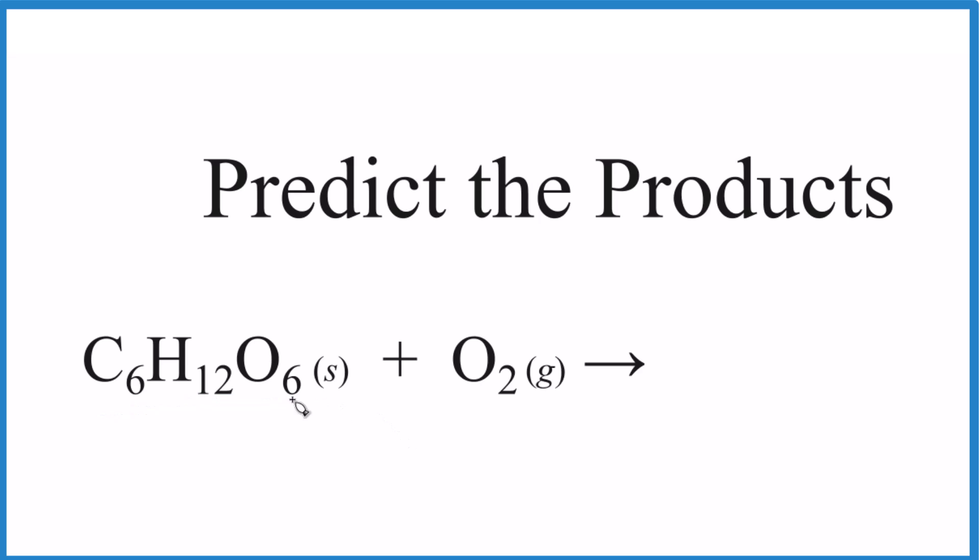So when you try to predict the type of products for a chemical reaction, if you can classify the reaction, the type of reaction, it's a lot easier.